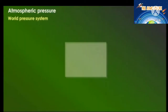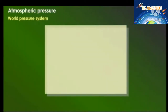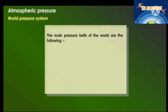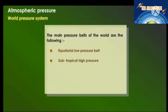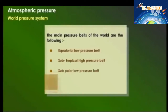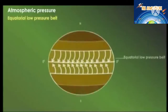World pressure system: the main pressure belts of the world are the following — first, the Equatorial low pressure belt; second, the Subtropical high pressure belt; third, the Subpolar low pressure belt; and fourth, the Polar high pressure belt.